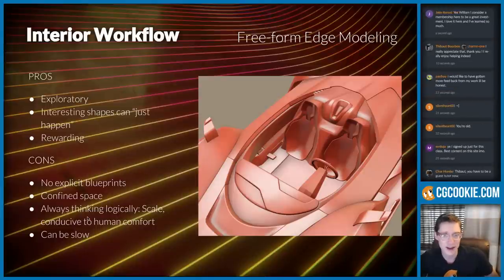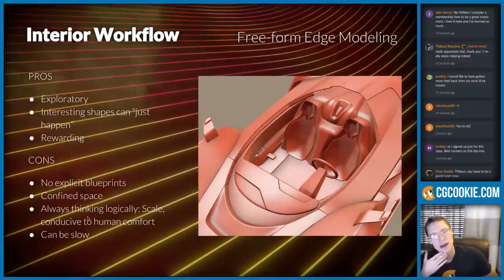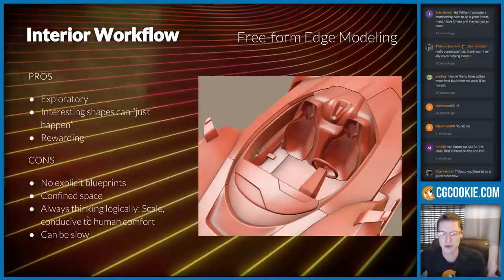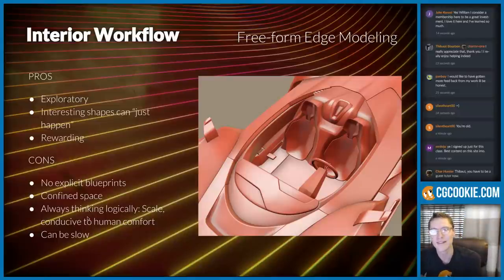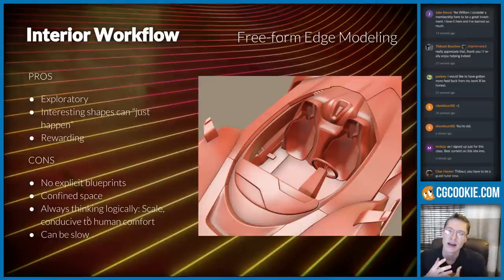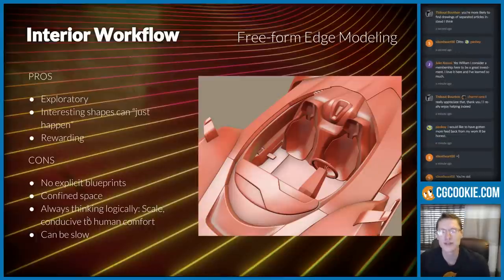Interior blueprints don't really exist or aren't common — several people in the class thread mentioned they couldn't find them either, and it makes sense: it's a confined space and visualizing that in orthographic views would be very difficult to make understandable. So we're left with only implicit reference. If you're modeling a real car, photographs of the interior will be your best friend. You have two approaches: set up a camera matching the photograph in 3D space, or the more translative approach of conforming reference to your model.